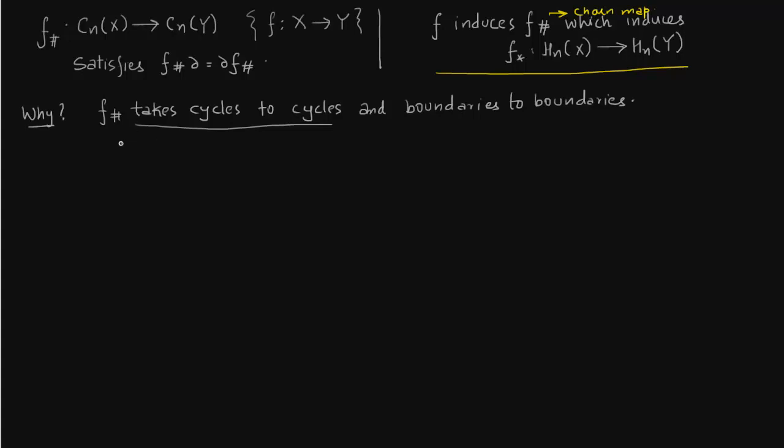You've already seen how homology of space X is defined and homology of space Y is defined in terms of cycles and boundaries. In both cases, the only condition we're using is that f hash delta equals delta f hash. It's very simple. To prove it takes cycles to cycles, you apply the boundary to this map. Interchange, and since delta alpha equals 0, we get 0.